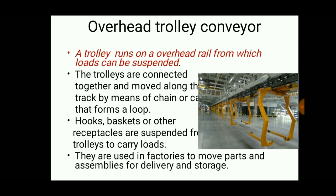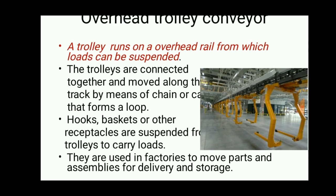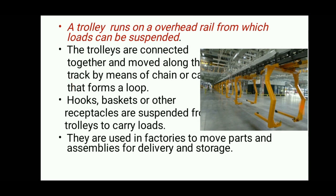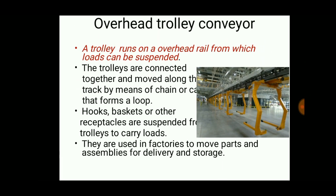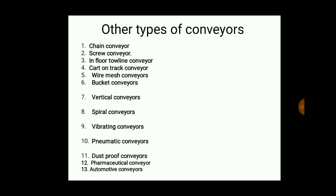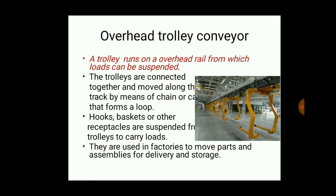Overhead trolley conveyors have a trolley that runs on an overhead rail from which loads can be suspended. This is particularly useful for painted parts, since using roller or skate conveyors would cause the paint to stick to the rollers and get damaged. The trolleys are connected together and moved along the track by means of a chain. Hooks, baskets, or other receptacles are suspended from trolleys to carry loads, and they are used in factories for moving parts and assemblies for delivery and storage.